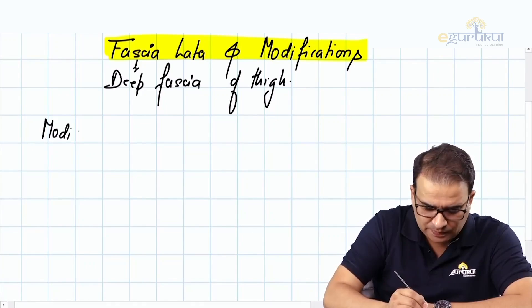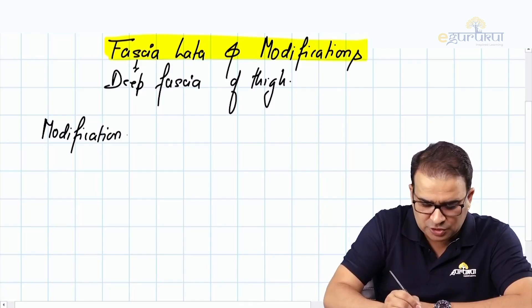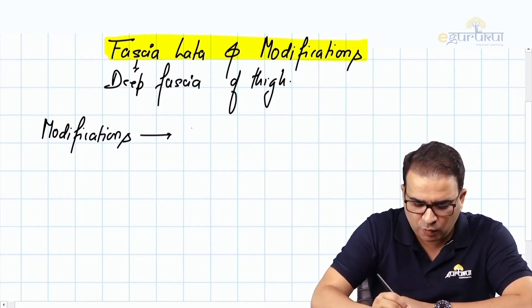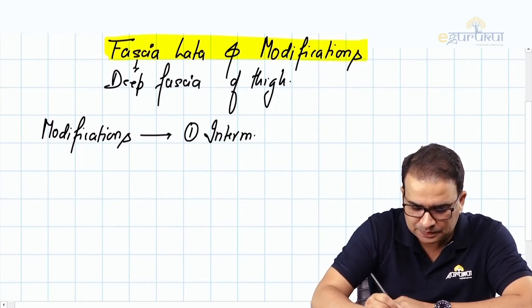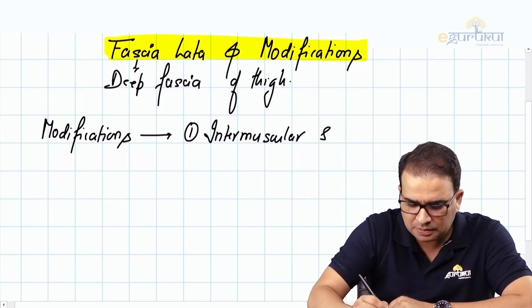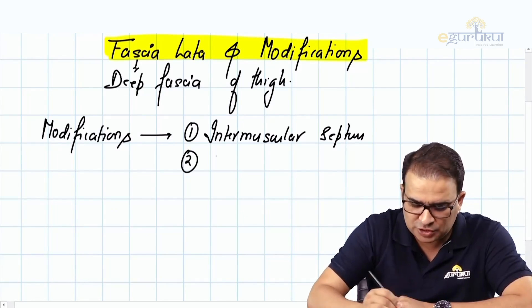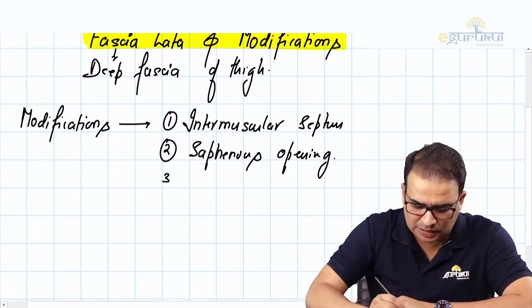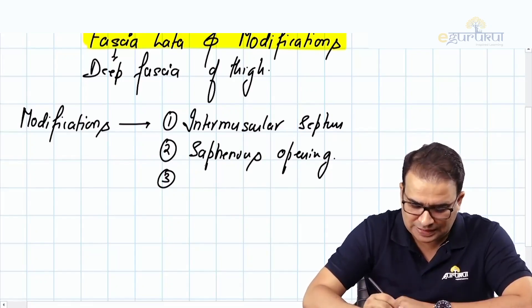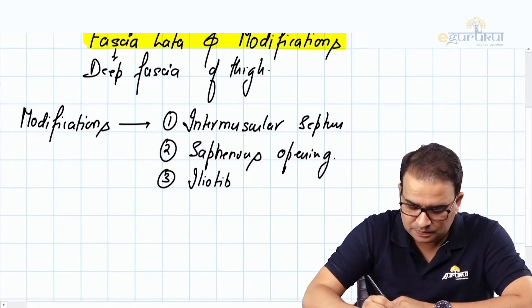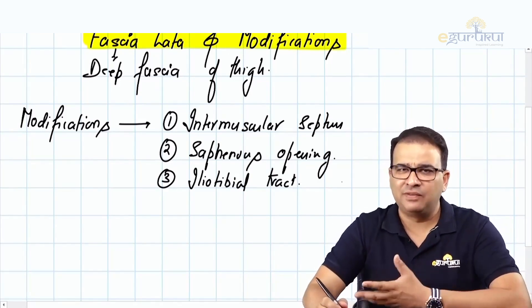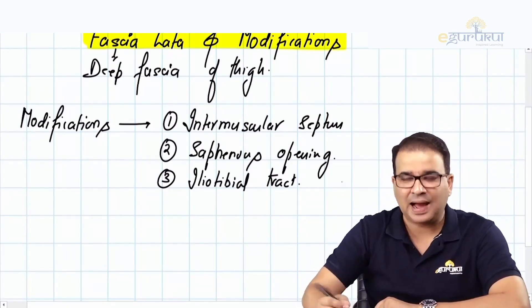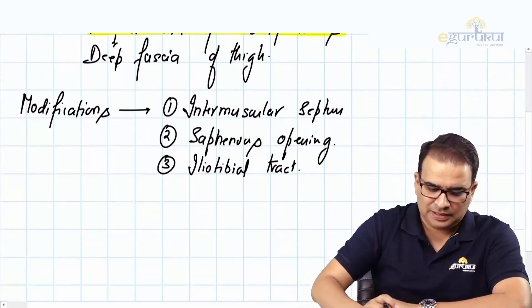The modifications of the fascia lata: the first modification is the intermuscular septum, the second modification is the saphenous opening, and the third modification is the iliotibial tract — probably the most important of all, also called the iliotibial band or IT band. Let's talk about all of them one by one.